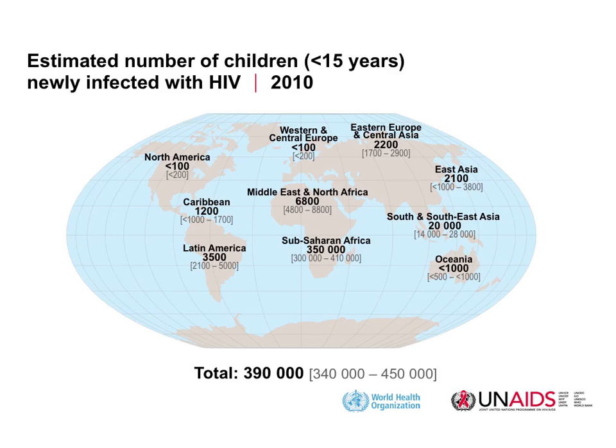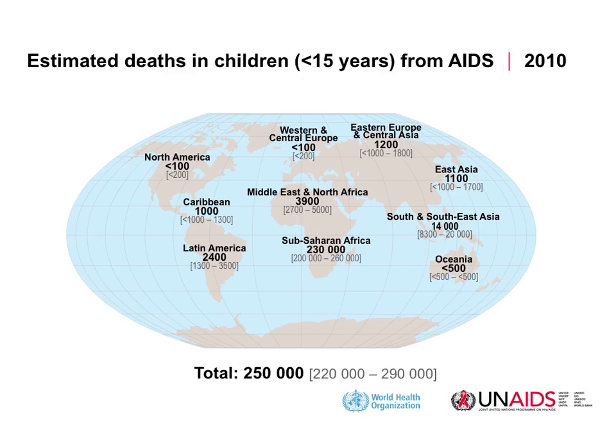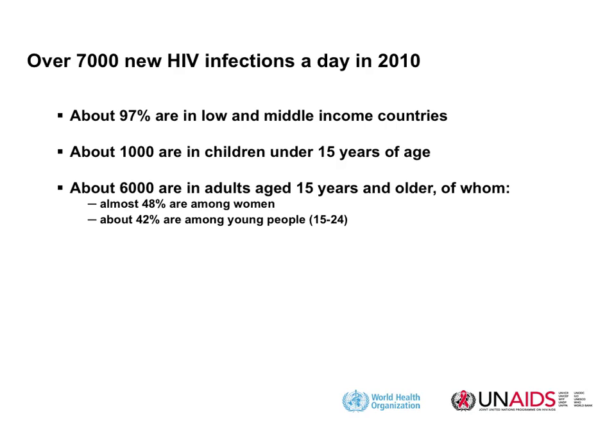Children newly infected in 2010: sub-Saharan Africa had 350,000 new infections in kids under 15. This is really a serious pandemic — 7,000 new infections per day, 97% in low- and middle-income countries, 1,000 in children under 15, and 6,000 in adults. Almost half are in women and almost half in young people. This infection is targeting future generations.